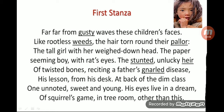We'll start with the first stanza, line by line. The first line: 'Far far from gusty waves these children's faces.' From the very beginning, the word 'far' is repeated twice — that is repetition, used for poetic effect. Further, we can identify alliteration: the consonant sound F is repeated in 'far,' 'from,' and 'faces.' Also, 'faces' — the part of the body — represents the whole children, so that is synecdoche.